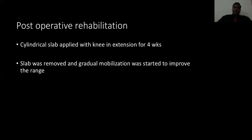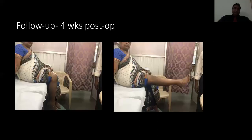Afterward it was converted into a cylindrical cast, and she was made to full weight bear with the cast in situ. The slab and cast was removed and gradual mobilization was started to improve the range after four weeks, because I did not want to keep it for a longer duration as it would have stiffened her knee. When she came for the post-op, I removed the cast and she had very good range — almost 90 degrees of mobilization on the day the cast was removed.